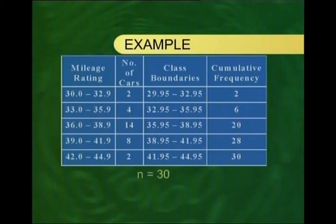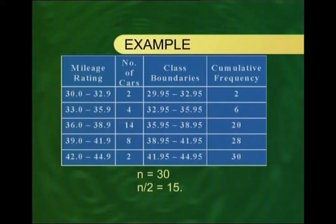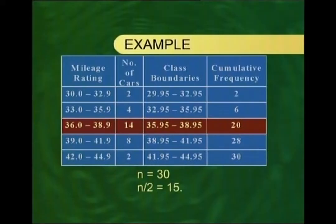I will use the same example of the EPA mileage ratings. As you now see on the screen, the column of cumulative frequencies for that example is 2, 6, 20, 28, and 30. Dividing 30 by 2, we obtain the number 15. If we want to locate this number in the column of cumulative frequencies, it is obvious that the 15th value lies in the third class, whose cumulative frequency is 20, and does not lie in the second class, whose cumulative frequency is only 6.